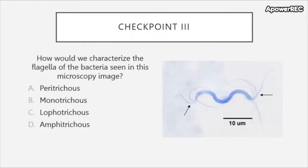Checkpoint three: how would we characterize the flagella on the bacteria seen in this microscopy image? A) peritrichous, B) monotrichous, C) lophotrichous, or D) amphitrichous?